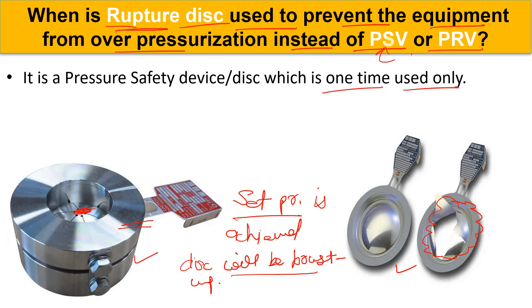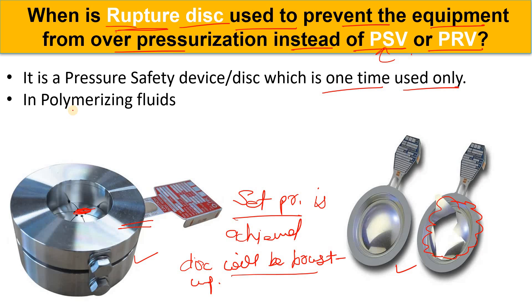The question is: when is the rupture disk used instead of PSV or PRV? One application is in polymerization fluid — whenever we handle polymerization fluid, we use the rupture disk instead of PSV or PRV. The viscosity of this fluid is very, very high, which could cause blockage if we are using a PSV or PRV.